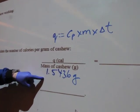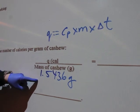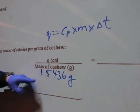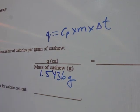The mass of the cashew, remember we found at the beginning of this experiment. You will have to go to the data table and retrieve that mass. I got it for you—it's right here: 1.5436 grams.